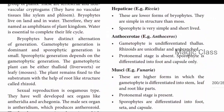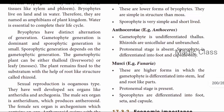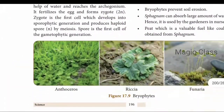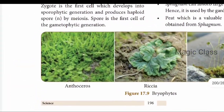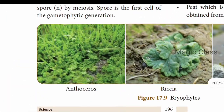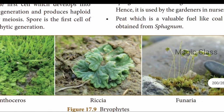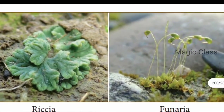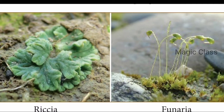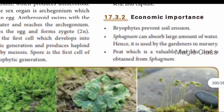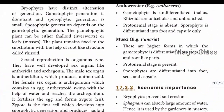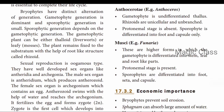In hornworts (example: Anthoceros), the sporophyte is differentiated into foot and capsule only. In mosses (example: Funaria), the gametophyte is differentiated into stem, leaf, and root-like structures. The protonemal stage is present in mosses. The sporophyte is differentiated into foot, seta, and capsule.